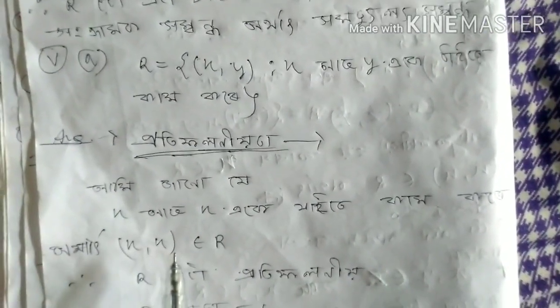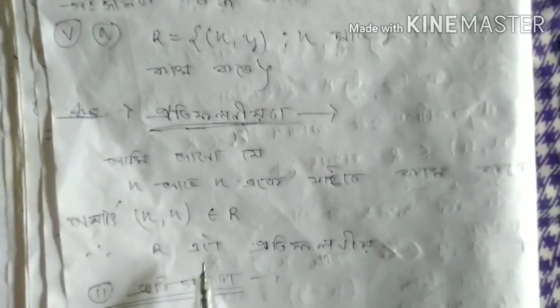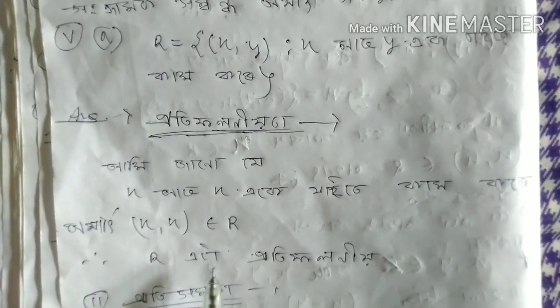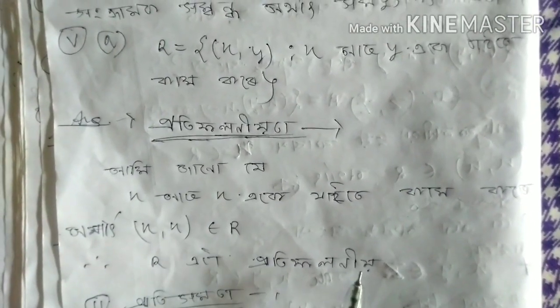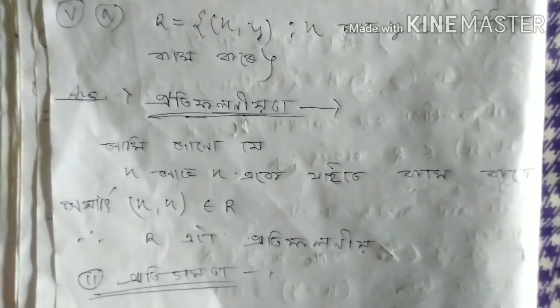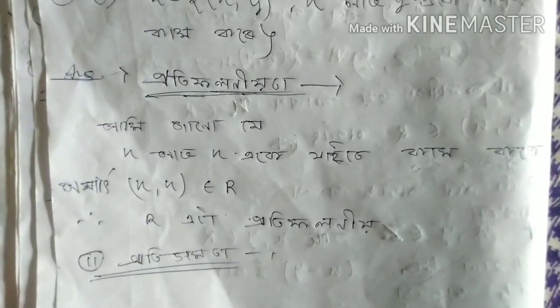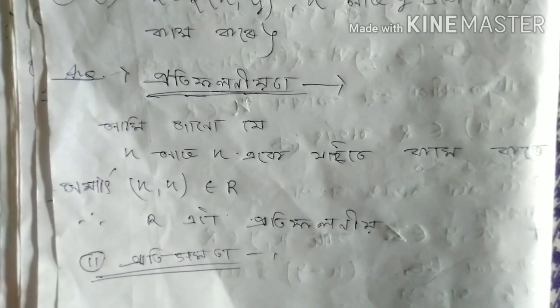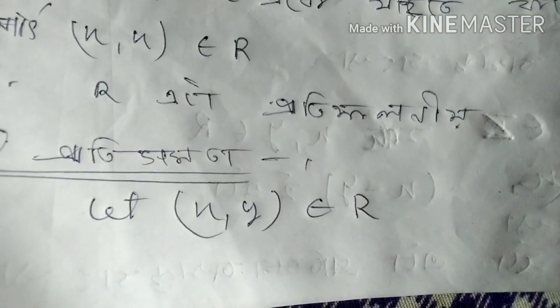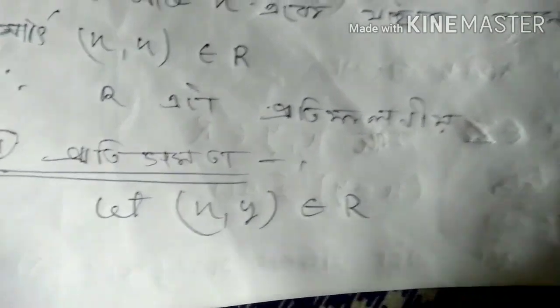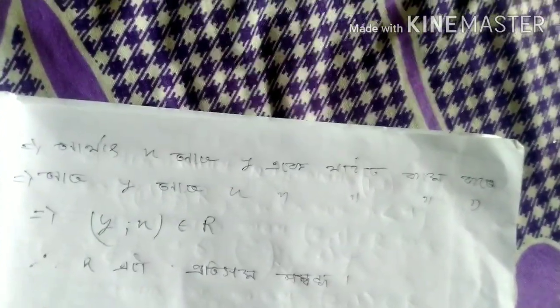R is equal to x, y, and R. So R is equal to R. This is equal to R. R is equal to R. You will believe y is equal to R.